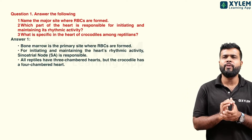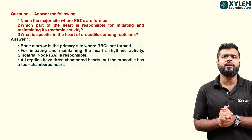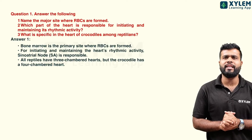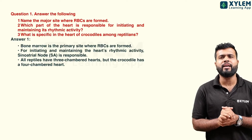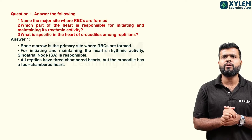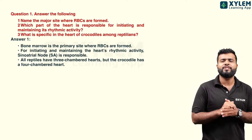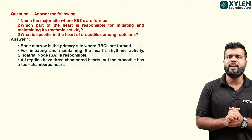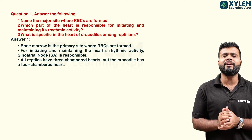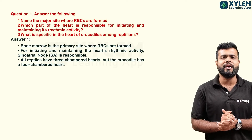Name the major site where RBCs are formed. Which part of the heart is responsible for initiating and maintaining its rhythmic activity? Which is specific in the heart of crocodiles among reptilians? First question: RBCs are formed in the bone marrow.